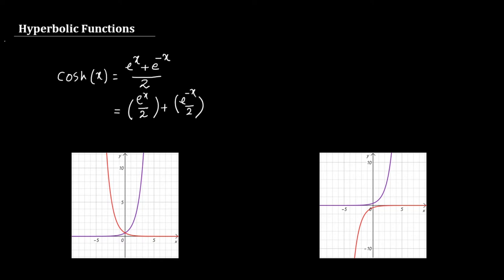If you look at the curves, this represents e^x / 2, and this represents e^(-x) / 2. The hyperbolic cosine function is the sum of these two, and it will look something like this — a U-shaped curve. This is the hyperbolic cosine function.